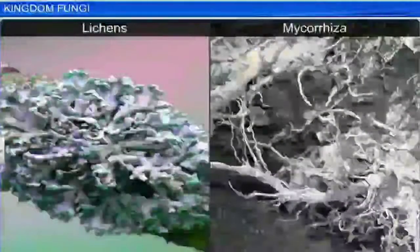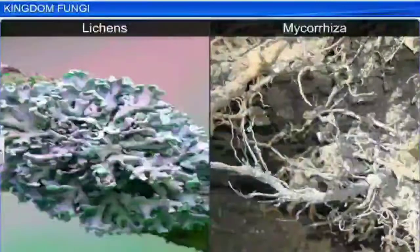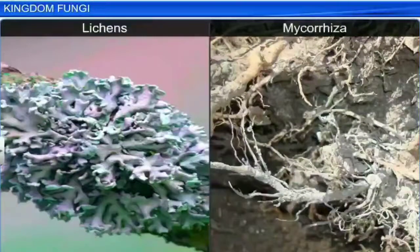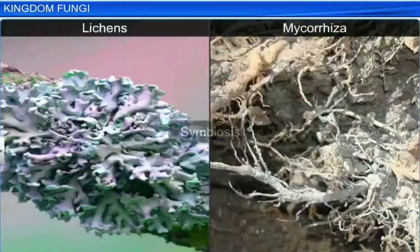In both lichens and Mycorrhiza, the relationship shared by fungi with the algae and the plant is called Symbiosis.